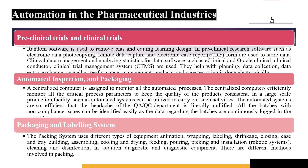Automated inspection and packaging. Centralized computers efficiently monitor all critical processes to maintain product quality, and automated systems are much more efficient at performing QA/QC testing. All batches with non-compliance issues can actually be easily identified as the data regarding the batches are completely stored in the computer.